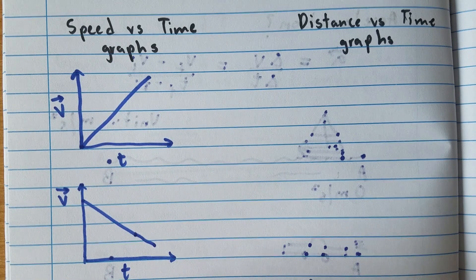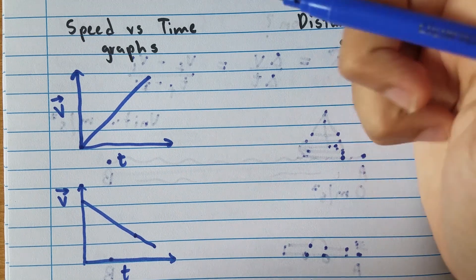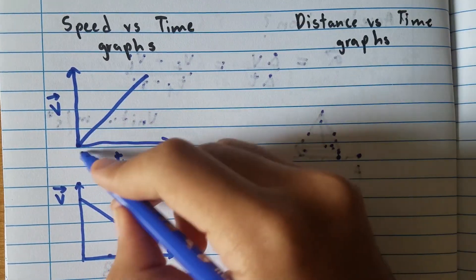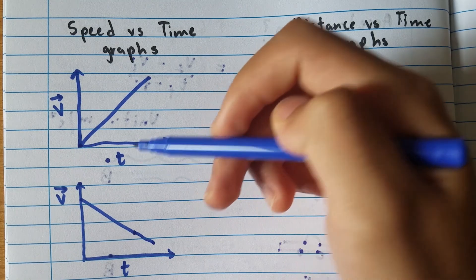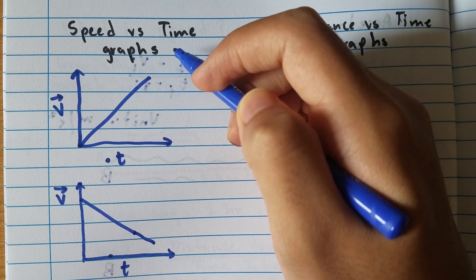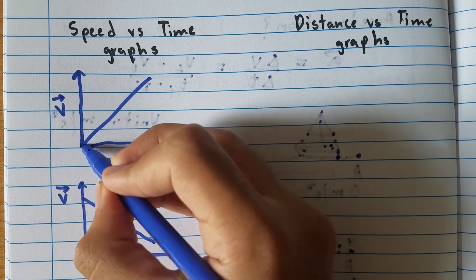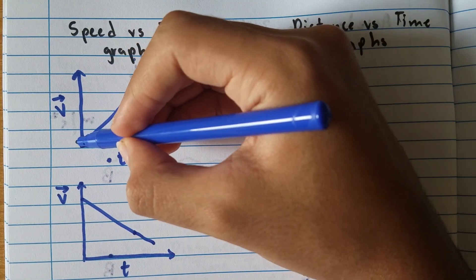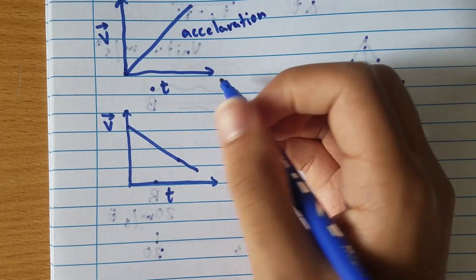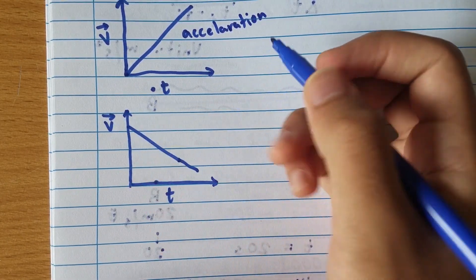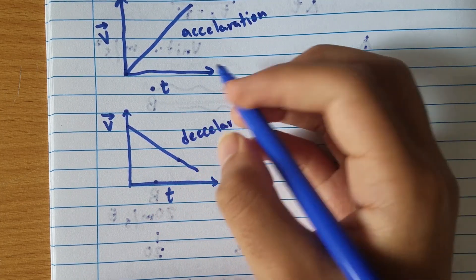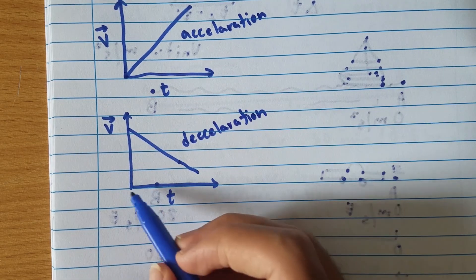Now let's talk about velocity-time graphs. Here we have a velocity-time graph with a straight upward line. The gradient of this line is velocity over change in time, which is acceleration by definition. If it's a straight upward line, the object is constantly accelerating — for every constant interval of time, velocity increases at a constant interval. The opposite — a straight line going downward — represents deceleration, a constant decline in velocity for every constant increase in time.